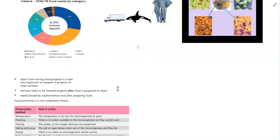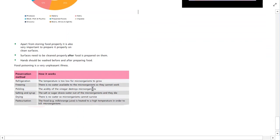That waste the microorganisms produce can be harmful to us. Hands should be washed before and after preparing food. There's no getting away from bacteria and fungi - they're everywhere - but we can keep them under control by washing our hands and cleaning up after we prepare food. Food poisoning is a very unpleasant illness: when a huge amount of bacteria gets into the body, it produces waste which acts as a poison to us and produces the symptoms of food poisoning.